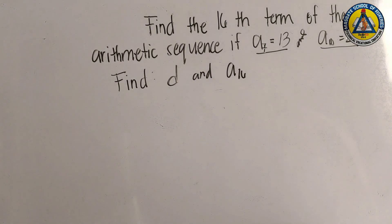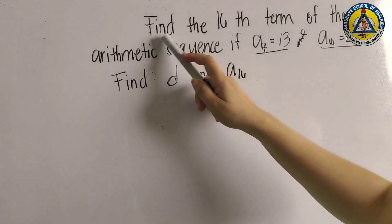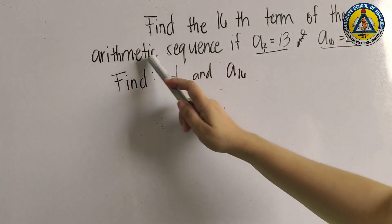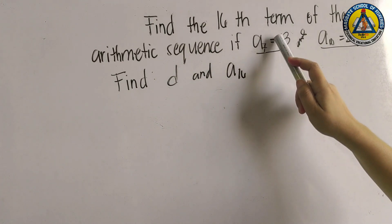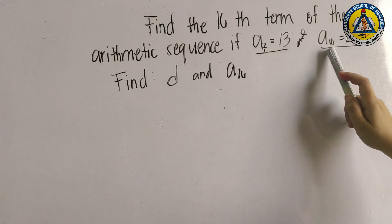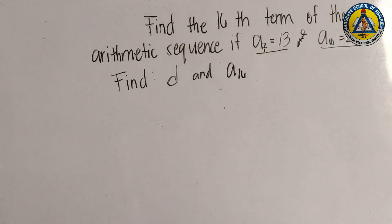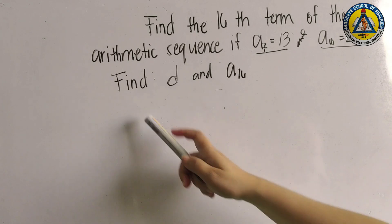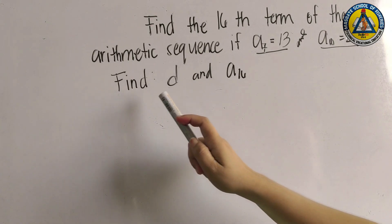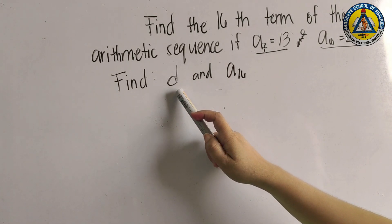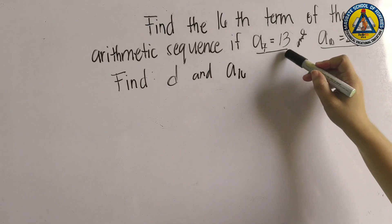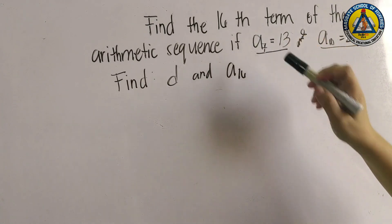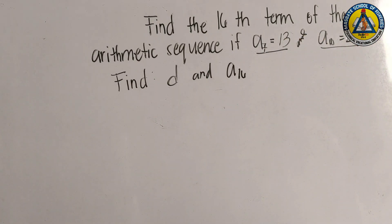Let's have another example: find the 16th term of the arithmetic sequence if a(7) = 13 and a(10) = 22. We are going to find the common difference d and a(16) using a(7) = 13 and a(10) = 22.